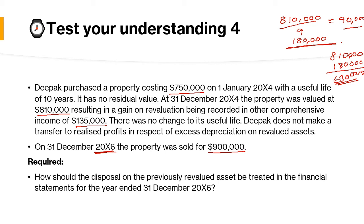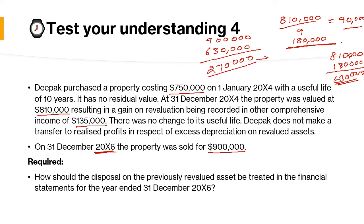The carrying value of the asset is $630,000 ($810,000 minus $180,000 depreciation), and the property was sold for $900,000, giving a profit on disposal of $270,000. That profit is transferred to the statement of profit and loss. Additionally, the earlier revaluation gain of $135,000 held in other comprehensive income also transfers to profit and loss on disposal.